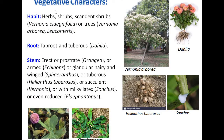Now we see the vegetative characters. The first is habit: herb, shrub, and scandent shrub. Scandent shrub is found in Vernonia elligiifolia. A tree is found in Vernonia arborea and Lacomeris. One interesting thing is that trees are also found in this family Asteraceae — this is Vernonia arborea.